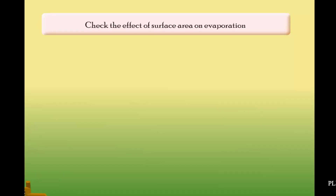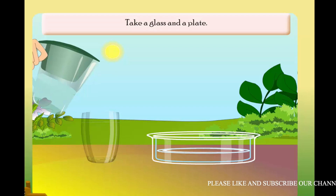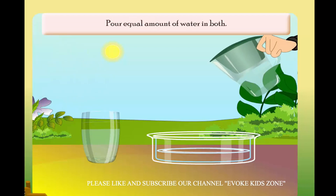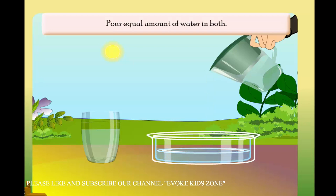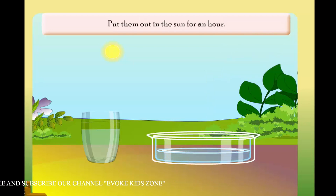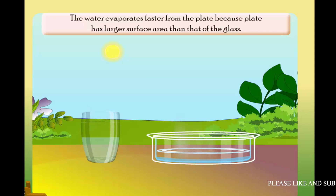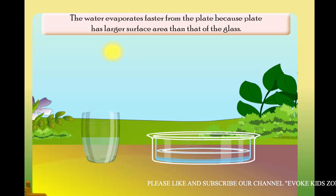To check the effect of surface area on evaporation, take a glass and a plate and pour equal amounts of water in both. Put them out in the sun for an hour and observe what happens. The water evaporates faster from the plate because the plate has a larger surface area than that of the glass.